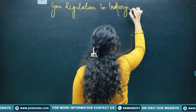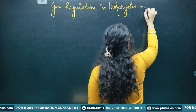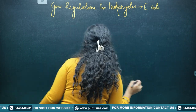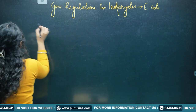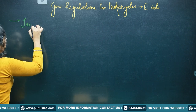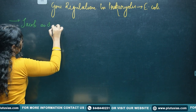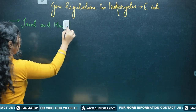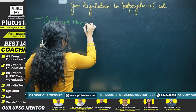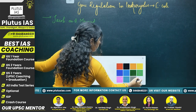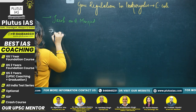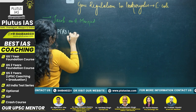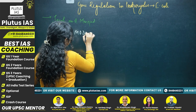When I say prokaryotes, I am talking about E. coli. This model was given by Jacob and Monod, and they gave us the operon model for understanding gene regulation.